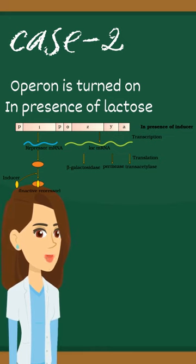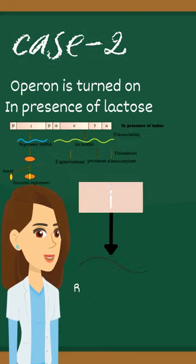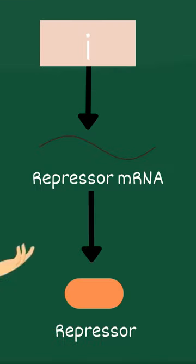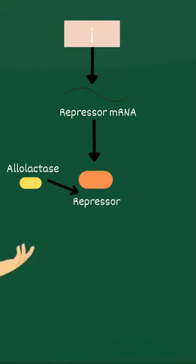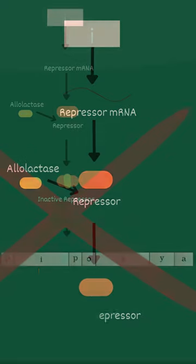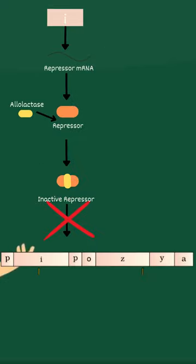The I gene codes for the repressor mRNA, which further leads to the synthesis of repressor protein, but this time the inducer, that is allolactase, binds to the repressor protein and prevents it from binding to the operator, hence preventing the operon from turning off.